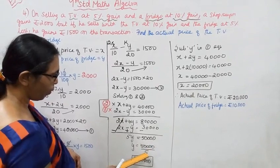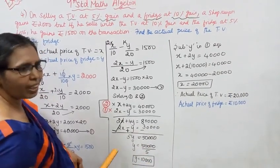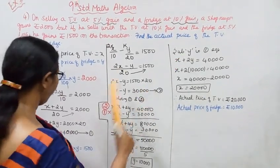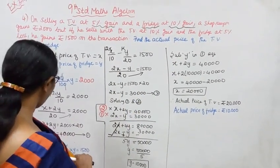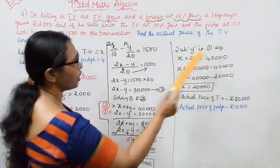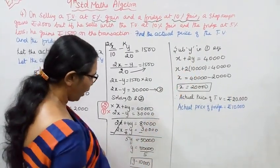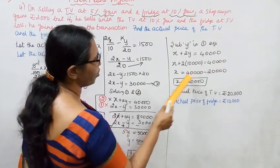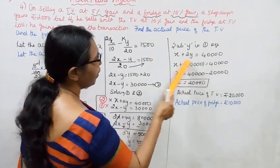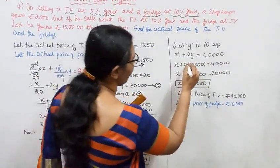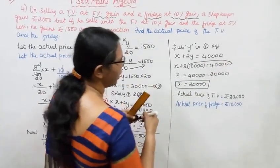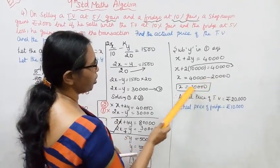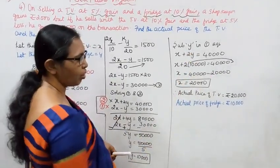5Y equals 80,000 minus 30,000, which is 50,000. So Y equals 50,000 divided by 5, giving Y equals 10,000. Substituting Y back into the first equation: X plus 2 into 10,000 equals 40,000. So X equals 40,000 minus 20,000, giving X equals 20,000.